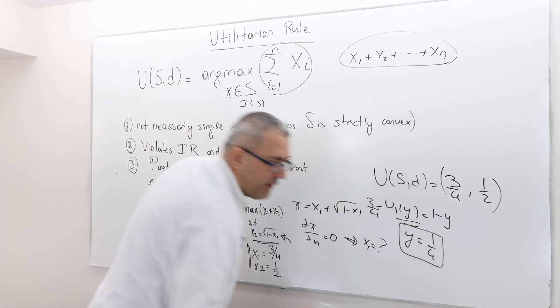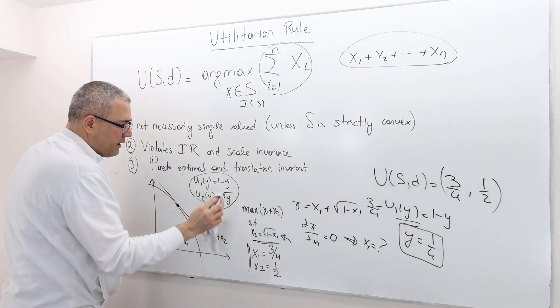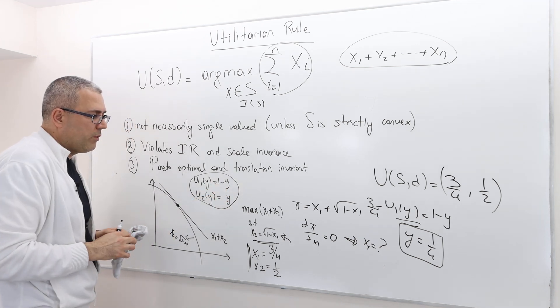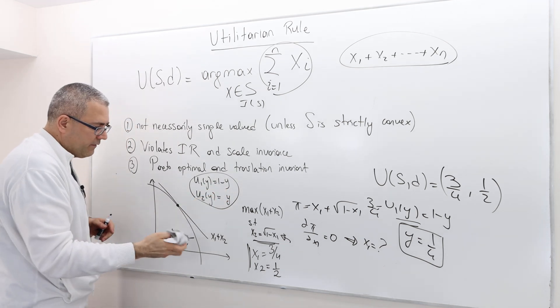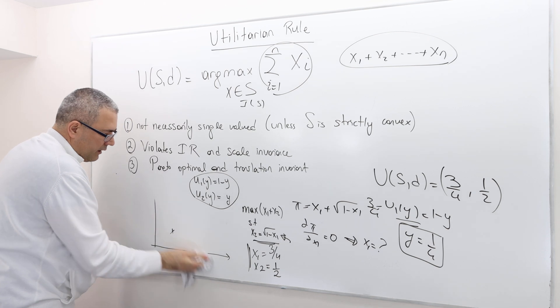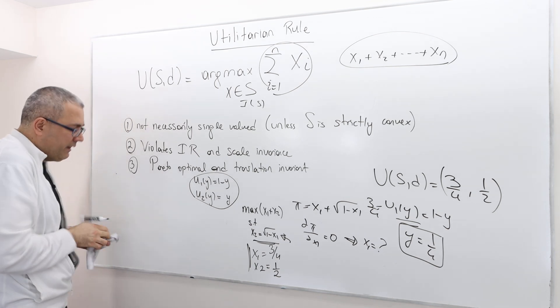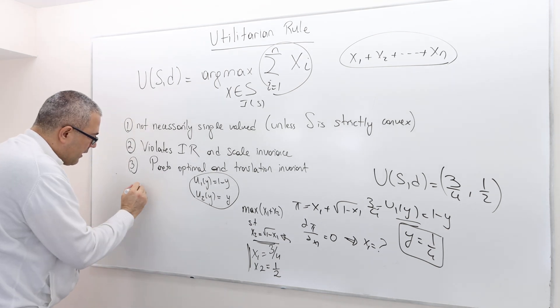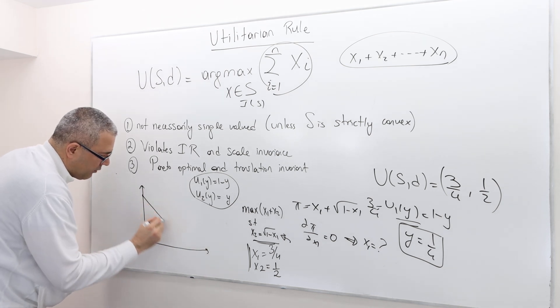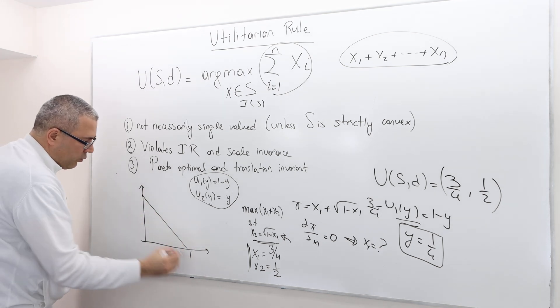What about the other example we keep doing? Instead of utility of y equals square root of y, we have both agents being risk-neutral. In this case, remember, my bargaining set was a straight line.